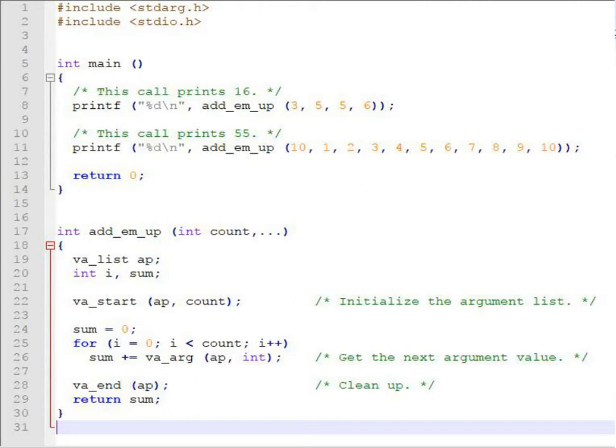And then I have used va underscore start open parenthesis ap comma count. After initializing sum equal to zero, I have included sum in a loop and I did the following operation: sum plus or equal to va underscore arg open parenthesis ap comma int. This will keep on repeating to the next argument value and this will add the next argument value to the sum. And when you are finished we have to give va underscore end as I gave in line 28, and then we are returning the value of sum to the function.